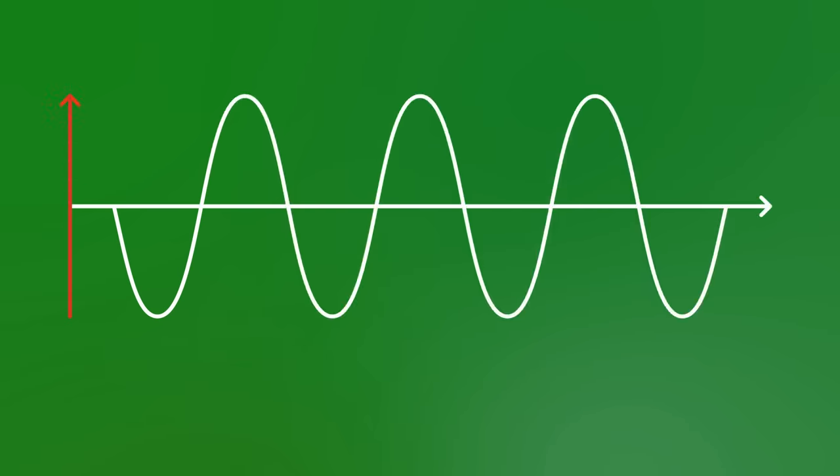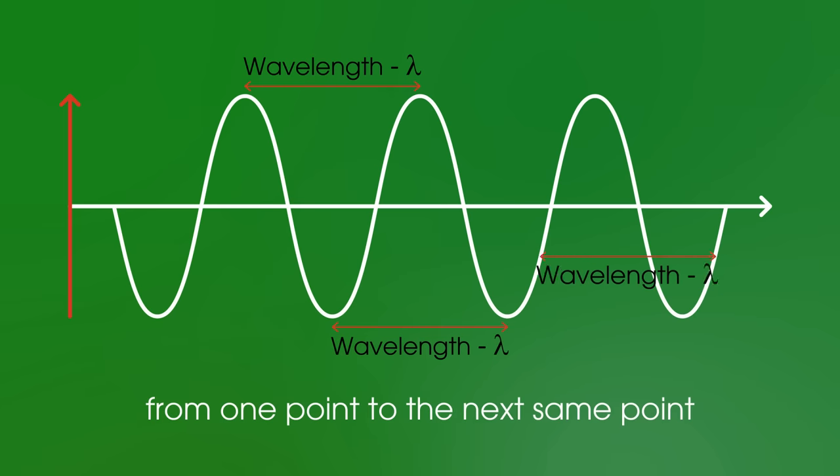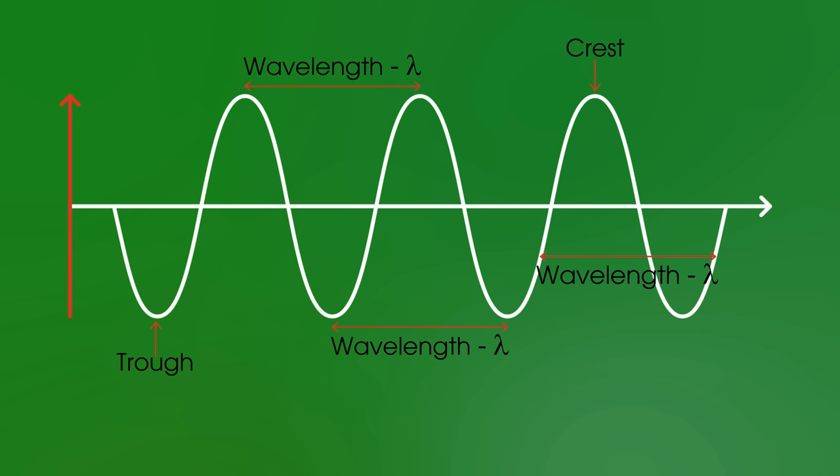Finally we need to know some key features of waves. First off wavelength. A wavelength is the length of a full cycle of a wave from one point to the next same point. It's easiest to think of as a distance from crest to crest or from trough to trough and we measure it in meters and it's given the symbol lambda.